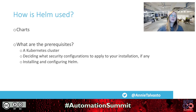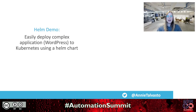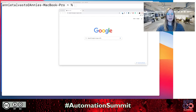Helm is used via charts. Prerequisites are having a Kubernetes cluster, deciding what configuration to apply to your installation, and then installing and configuring Helm. Now I'll do a quick Helm demo — easily deploying a complex application, WordPress, to Kubernetes using a Helm chart. You can really see how easy it is to use these services with the right tooling.